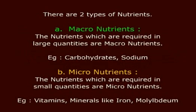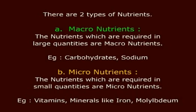There are two types of nutrients. Macronutrients are the nutrients which are required in large quantities. Example: carbohydrates and sodium. Micronutrients are the nutrients which are required in small quantities. Example: vitamins and minerals like iron and molybdenum.